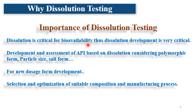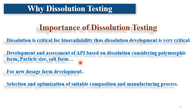Dissolution is critical for bioavailability, making dissolution development very critical as well. Dissolution is also used for the assessment of APIs. If you are developing a new chemical entity or new molecular entity, a tentative formulation is developed and checked for dissolution. Based on that, the API is screened considering polymorphic form, particle size, salt form, and other factors.